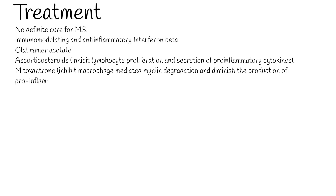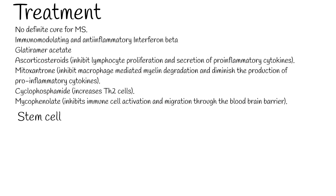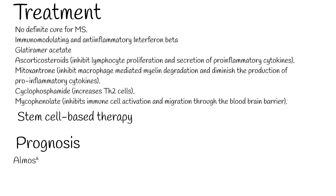Corticosteroids inhibit lymphocyte proliferation and secretion of pro-inflammatory cytokines. Mitoxantrone inhibits macrophage-mediated myelin degradation and diminishes production of pro-inflammatory cytokines. Cyclophosphamide increases Th2 cells. Mycophenolate inhibits immune cell activation and migration through the blood-brain barrier. Generally these agents do not halt ongoing neurodegeneration, so other strategies such as stem cell-based therapy are proposed as potential novel treatment paradigms.